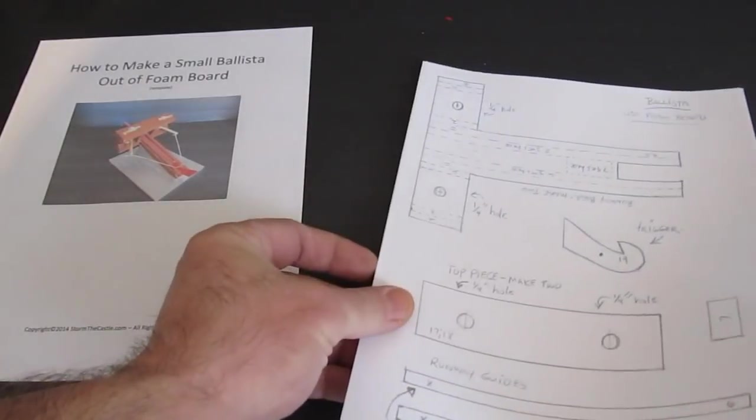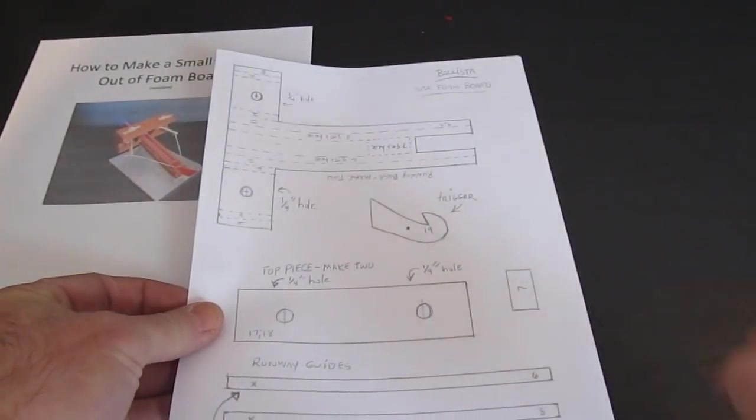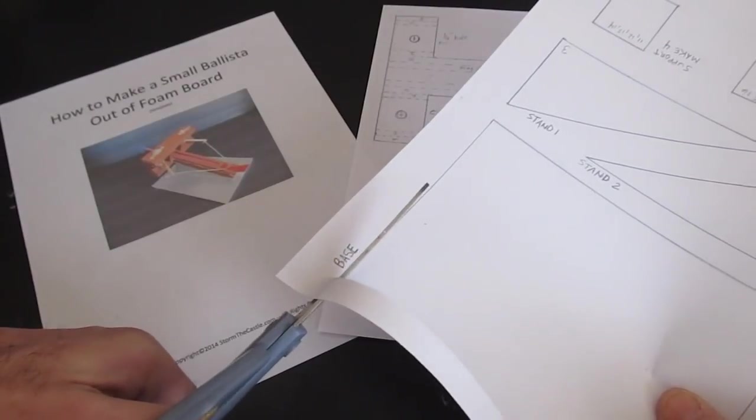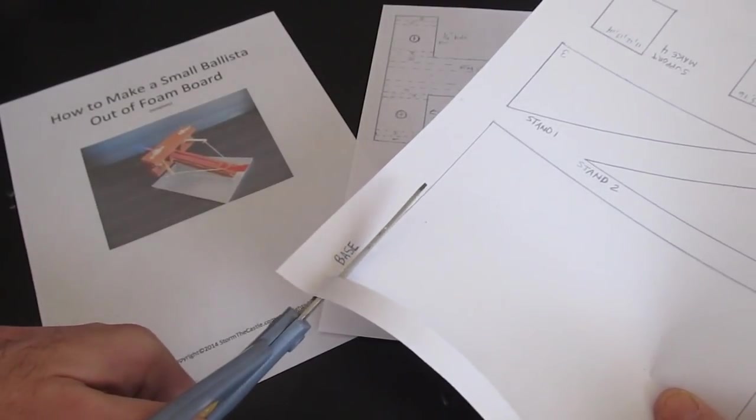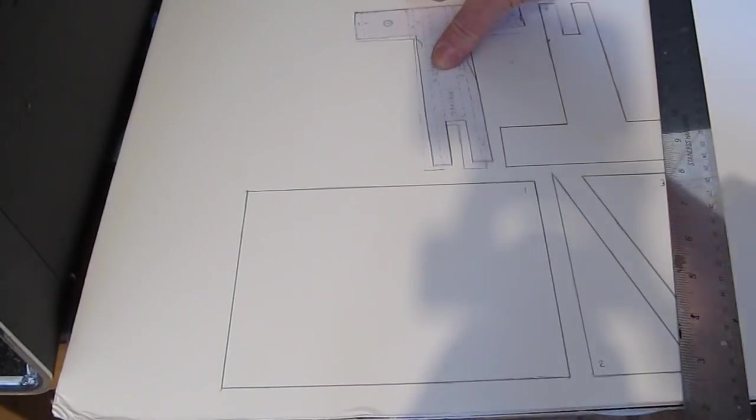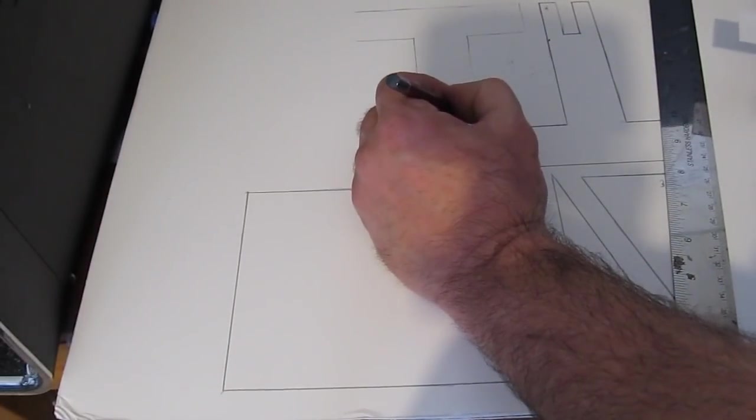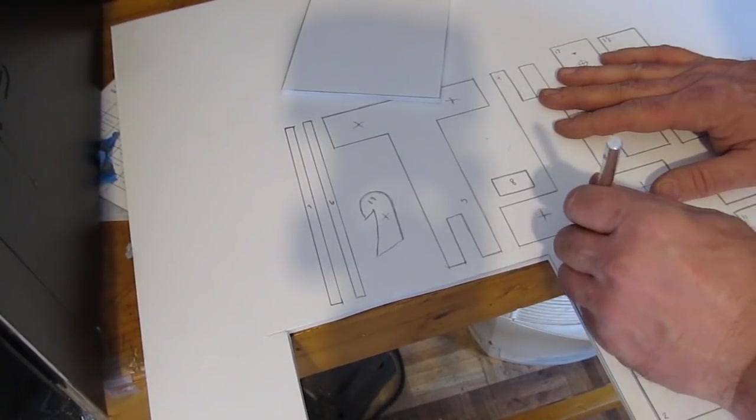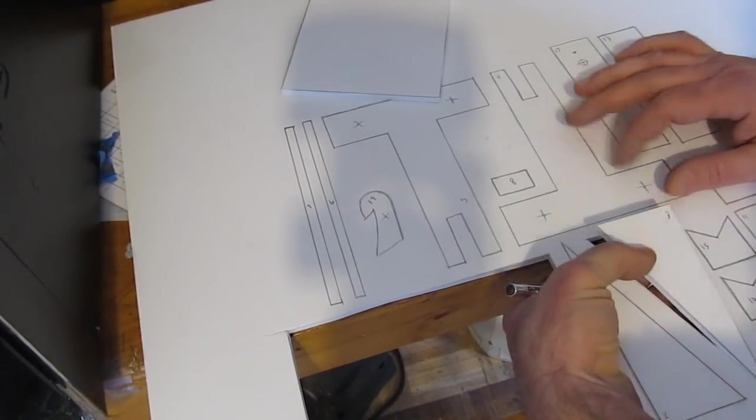Print up the template—the link is in the description of this video—and cut out the pieces. Now trace those pieces onto your foam board, and you only need one piece of foam board to make this. And then cut them all out. And they're all numbered to make it real easy for you to build.